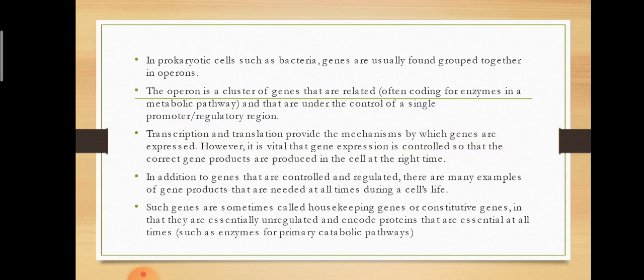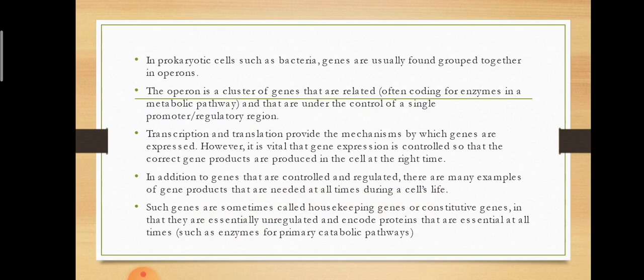Transcription and translation provide the mechanism by which genes are expressed. However, it is vital that gene expression is controlled so that the correct gene products are produced in the cell at the right time. In addition, there are many examples of gene products that are needed at all times during the cell's life — some proteins are continuously synthesized and are not regulated or controlled. Such genes are sometimes called housekeeping genes or constitutive genes, as they are essentially unregulated and encode proteins that are essential at all times, such as enzymes for primary catabolic pathways.